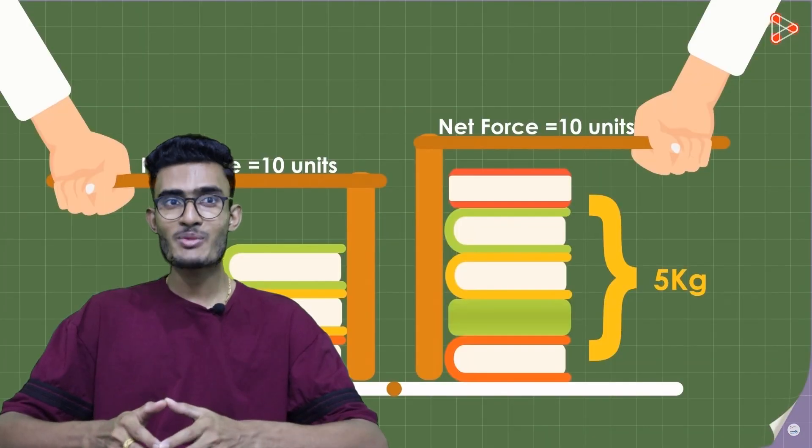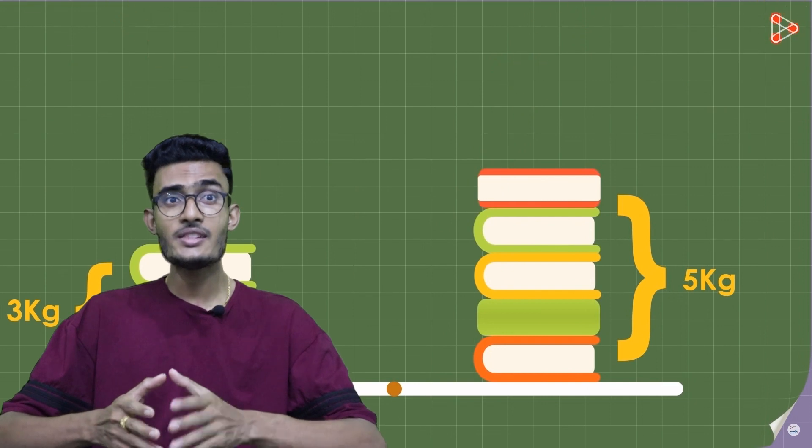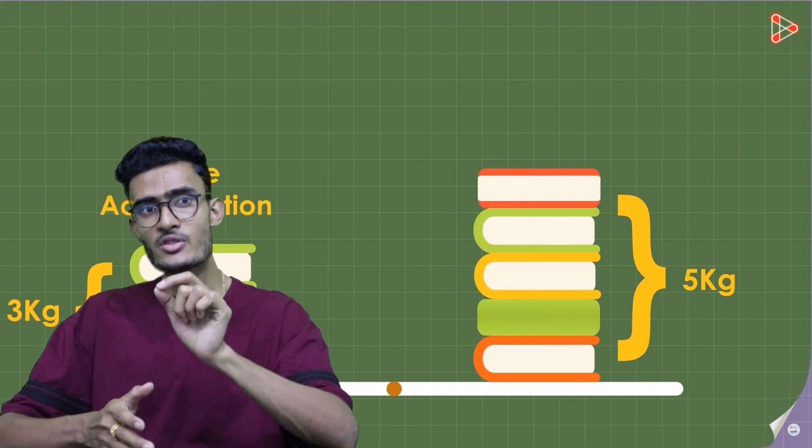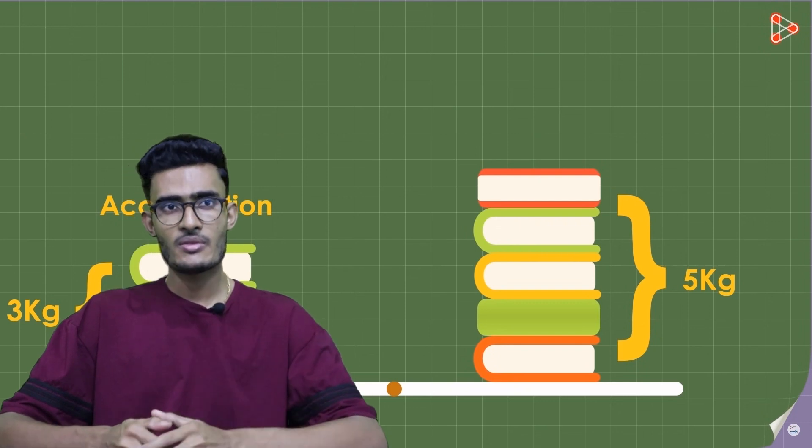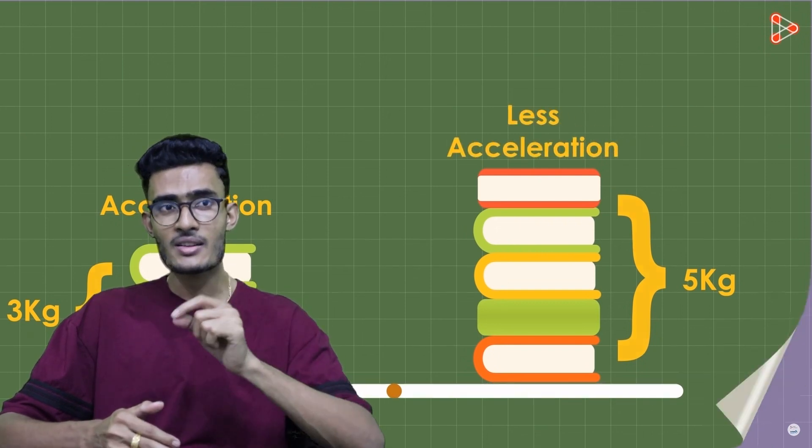The second law of motion is sometimes called the law of acceleration. It states that the acceleration of an object is directly proportional to the force applied to it and is inversely proportional to its mass.